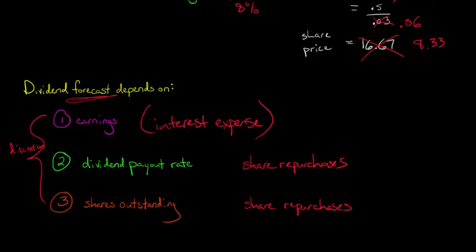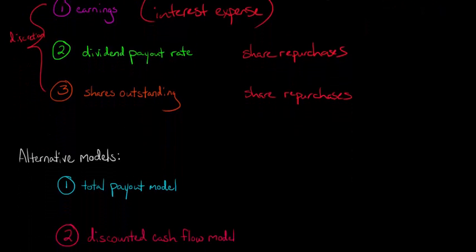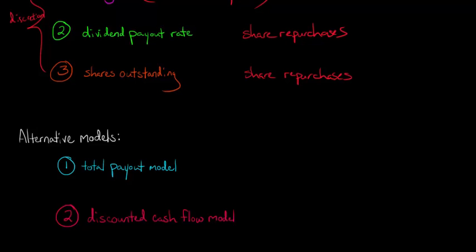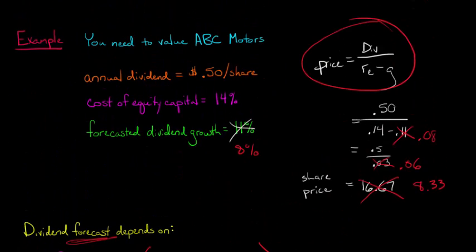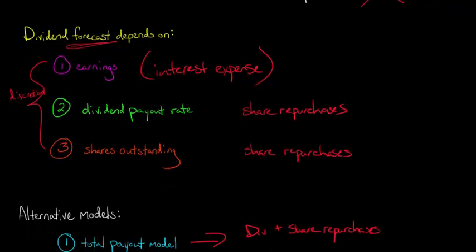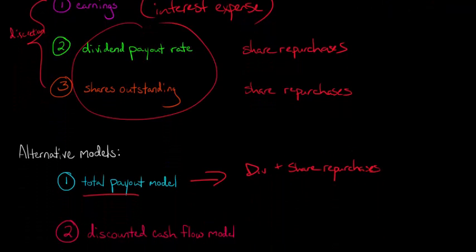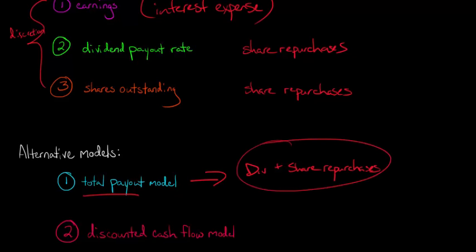And so what people have done is they actually come up with some alternative models to kind of avoid these issues of just focusing on dividends and dividend growth. We can actually look at, for example, the total payout model. What they mean by total payout in this alternative model is they're saying we're going to look at dividends and share repurchases. Because we're not factoring in share repurchases when we're looking at the dividend discount model. We're not even taking into consideration share repurchases, which affect both the number of shares outstanding and the dividend payout rate. The total payout model looks at all distributions to equity holders, dividends and share repurchases.